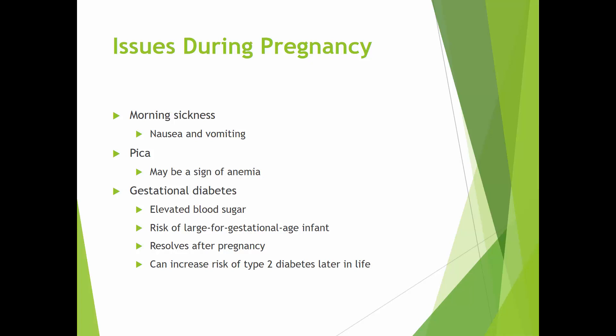Pica — the eating of non-food items — is another issue and may be a sign of anemia; there is still some debate about what it indicates. Gestational diabetes is the development of diabetes during pregnancy and can increase the risk for a large-for-gestational-age infant. Women are tested for it during pregnancy — if you've been pregnant you may know the glucose test. If it's managed well during pregnancy, complications can be minimized.